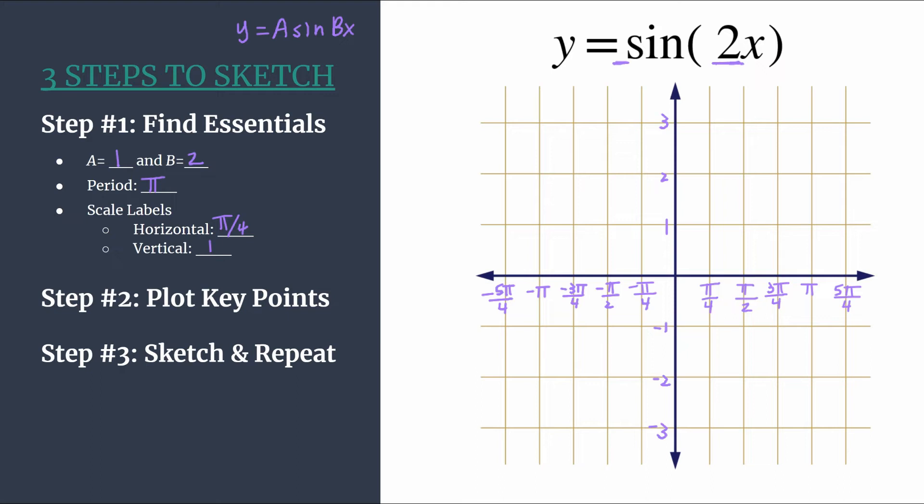Remember the pattern for sine that is not reflected will be zero, max, zero, min, repeat. So knowing that we are ready to start. We know an unshifted sign graph starts at the origin with a point zero, zero.